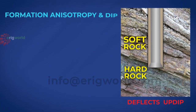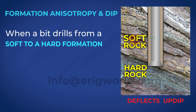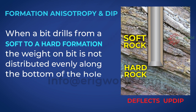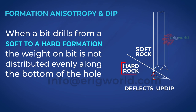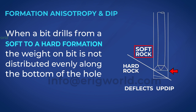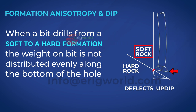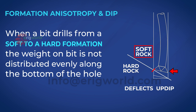When a bit drills from a soft to a hard formation, the weight on bit is not distributed evenly along the bottom of the hole. Since more of the weight on bit is taken by the hard formation, the bit keeps drilling the soft formation, and a moment is generated at the bit. This changes the pendulum length to the point of tangency, as well as the side force at the bit.